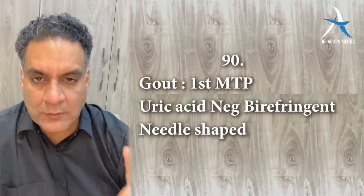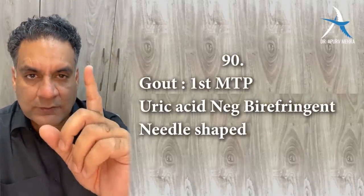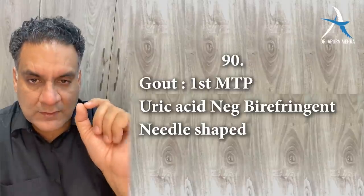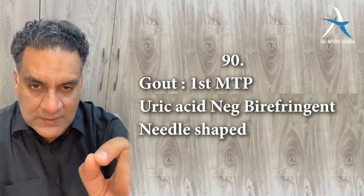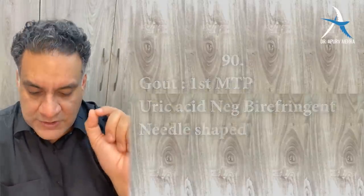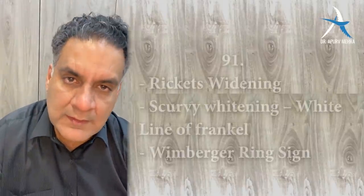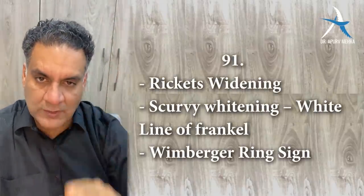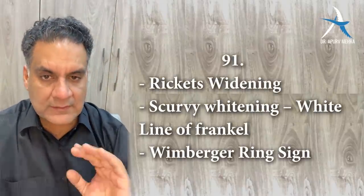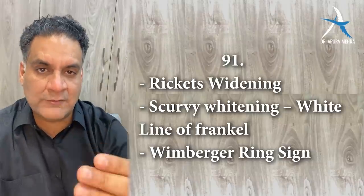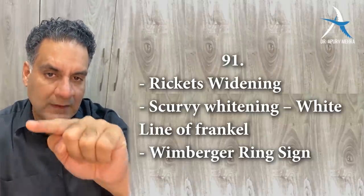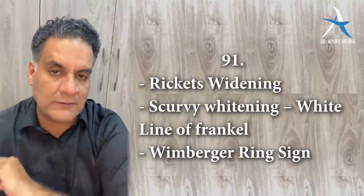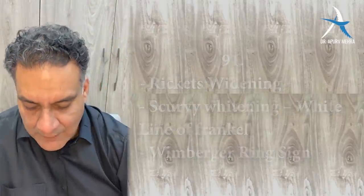Point number ninety: gout involves the first metatarsophalangeal joint. Uric acid crystals are negatively birefringent and needle shaped. Point number ninety-one: in rickets there is widening near the joints. In scurvy there is a white line — white line of Frankel — at bony ends. The epiphyses are encircled, called the Wimberger ring sign.